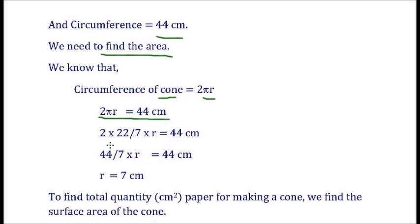So, 2πr is equal to 44 cm. That is equal to 2 × 22/7 × r = 44 cm. That is r is equal to 7 cm.